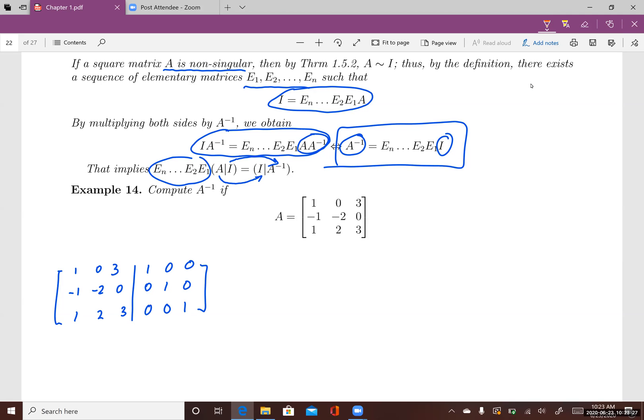You want to keep the first row, make this entry equal to 0 and this entry equal to 0 using row operations. Row 2 will be row 2 plus row 1. Row 3 is row 3 minus row 1. Then row 1 stays the same. Row 2 plus row 1 will be new row 2: 0, negative 2, 3, 1, 1, 0.